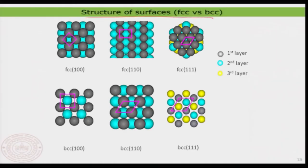We spent quite some time looking at the structure of surfaces, focusing mostly on FCC and BCC type crystals. You can use this understanding to work out problems related to other surfaces as well. We also learned how to name surfaces — the name was always related to the HKL index or the Miller index of a surface, naming according to the plane through which we cut the surface.